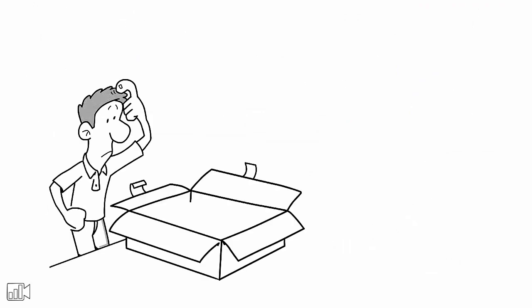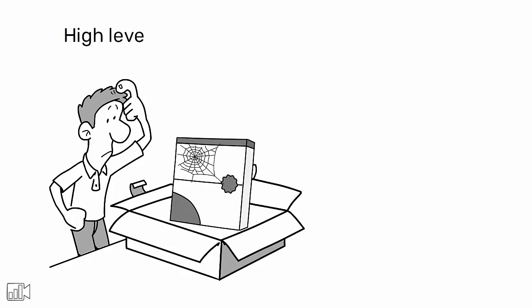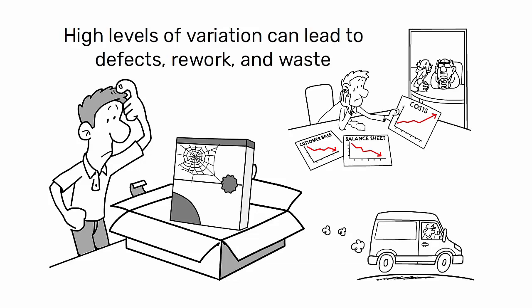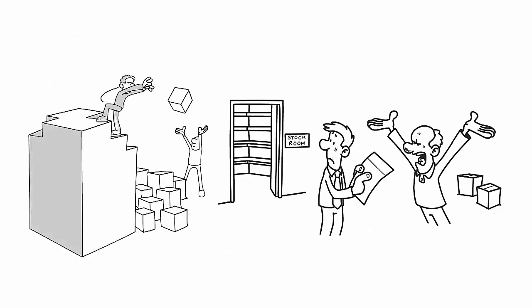Process variation can have significant impacts on the quality and efficiency of production. High levels of variation can lead to defects, rework, and waste, all of which increase costs and delay delivery times. It can also make it harder to plan and manage production, as the output is less predictable.